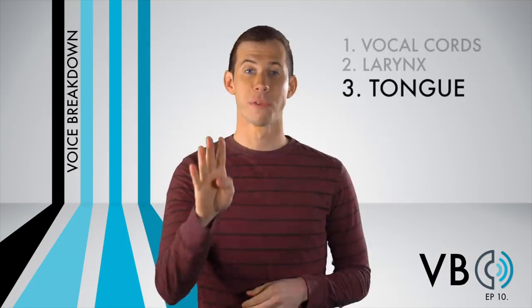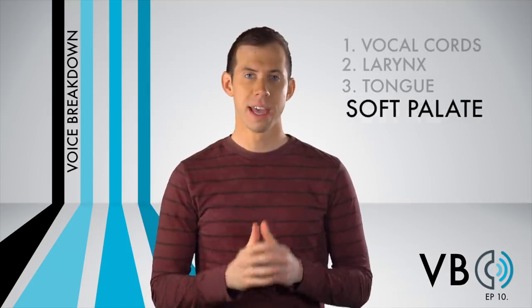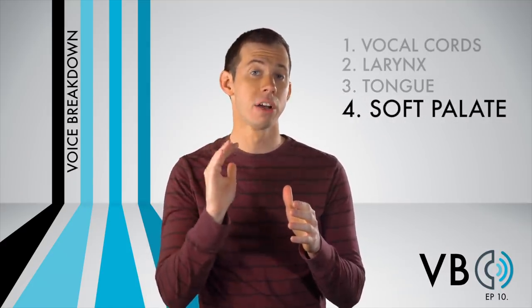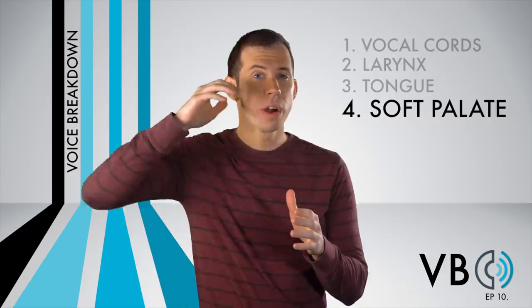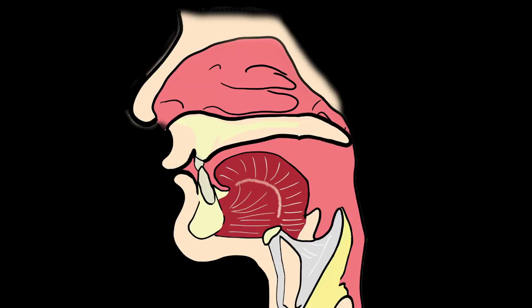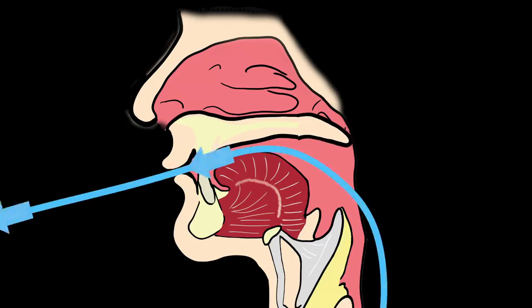Component number four: the soft palate. In addition to lowering the back of the tongue, we want to raise the soft palate to assist with creating that darker sound. The higher and rounder you can make it, the better. Imagine what the Cave of Wonders looks like — we want it all open and rounded in the back.